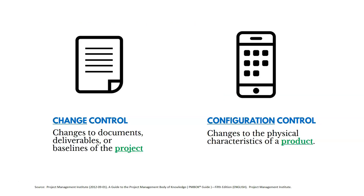We need to distinguish between change control and configuration control. Change control is changes to documents, deliverables, or baselines — project-related changes. Configuration control is different: it's changes to the physical characteristics of a product. If you think about the Apple iPhone, they manage configuration changes to versions of the iOS — those are product-related changes.